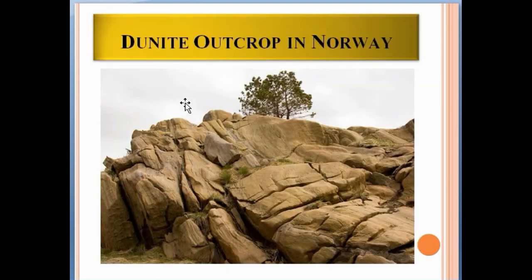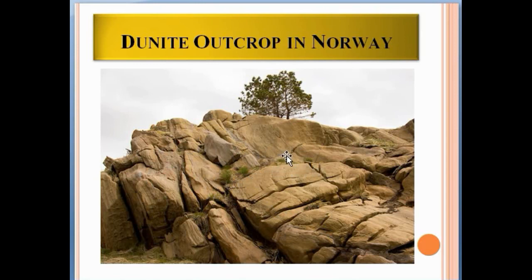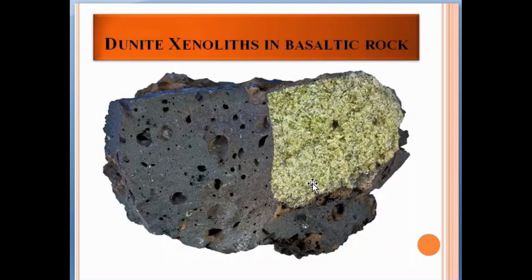Here is a dunite outcrop in Norway. You can see the massive layering of this dunite — this is a surface exposure, which is why it appears weathered.